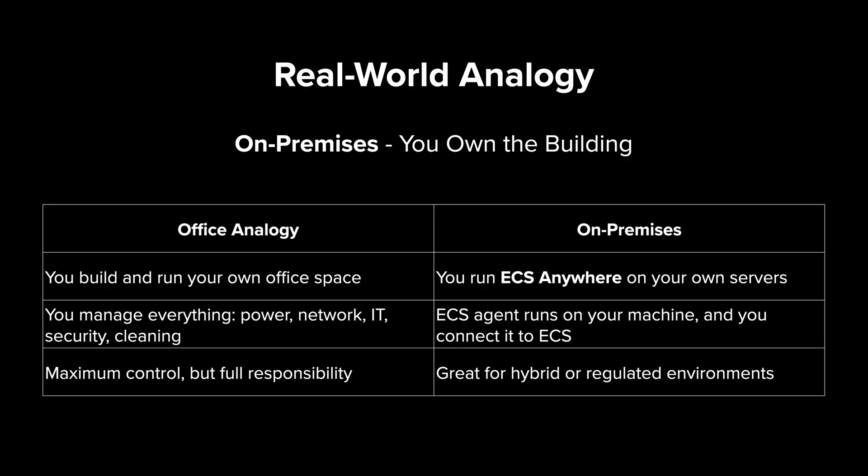Finally, we have the external launch type, also known as ECS Anywhere. This is like setting up your own private office off the grid — you build the space, install the power, networking, and security, everything fully owned and operated by you. In the ECS world, this means running the ECS agent on your on-premises servers and connecting them to your ECS cluster. This approach gives you maximum control and is ideal for hybrid environments, edge locations, or companies with strict data residency requirements. For instance, if you have workloads that need to run in your local data center for compliance reasons, you can still manage them through ECS while keeping them physically on-premises.